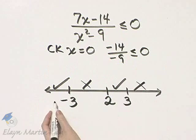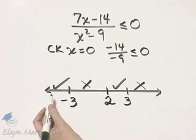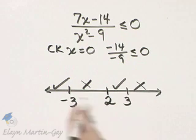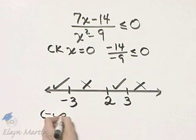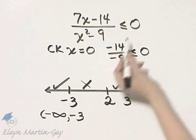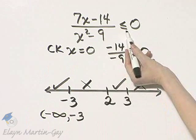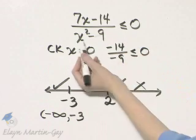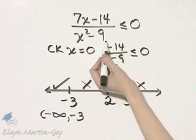Now, let's write down our solution in interval notation and we'll go from left to right. So that will be from negative infinity to negative 3. Now, does negative 3 get a parenthesis or a bracket?